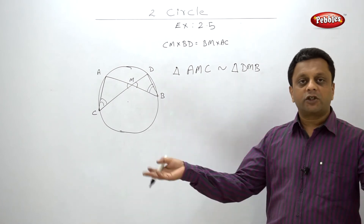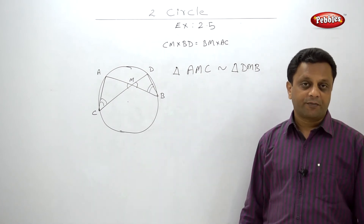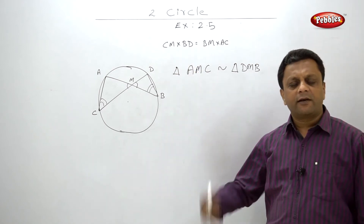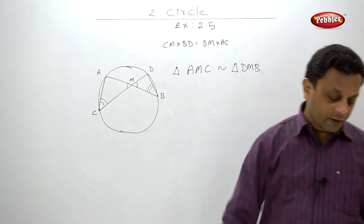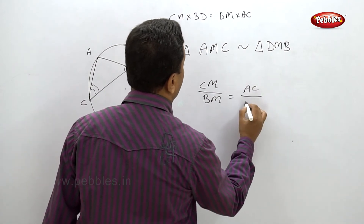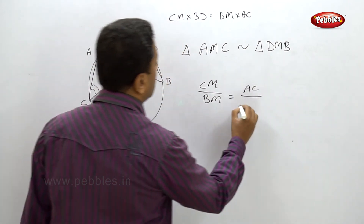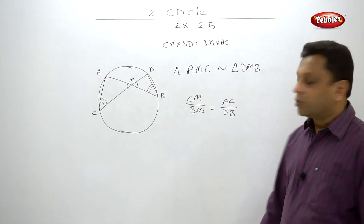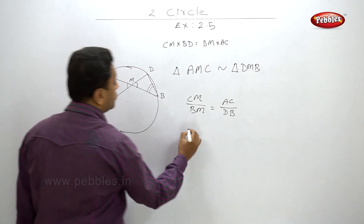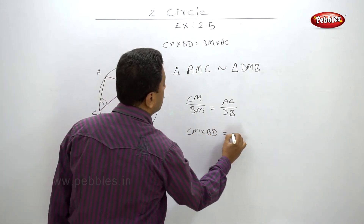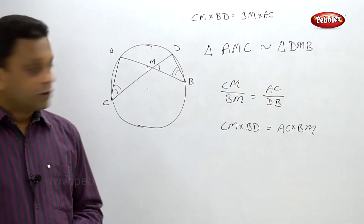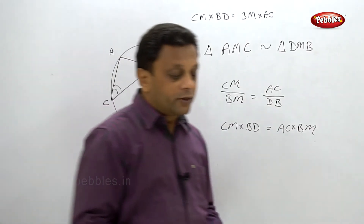After writing the ratio CM/BM = AC/DB, just transfer to the other side. CM into BD is equal to AC into BM. Proved. Let us now move to example number 5.